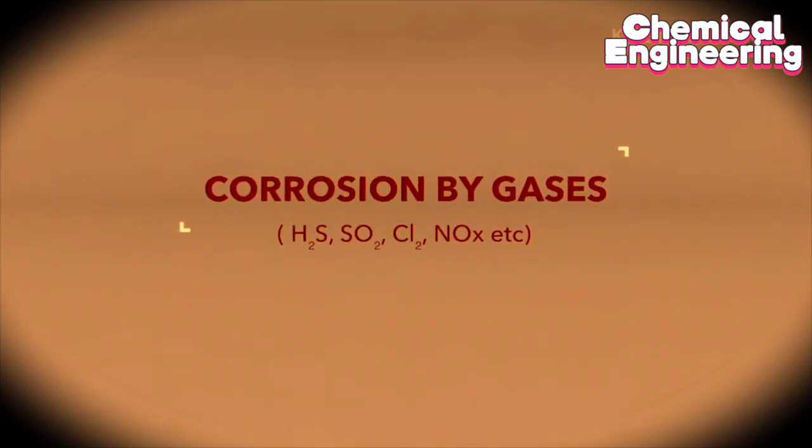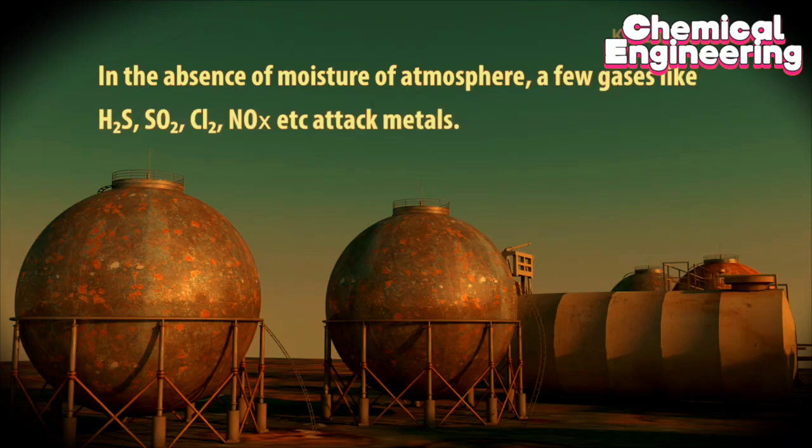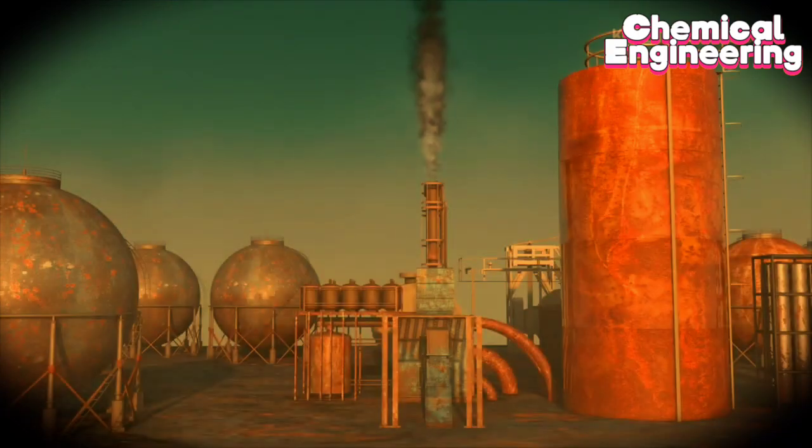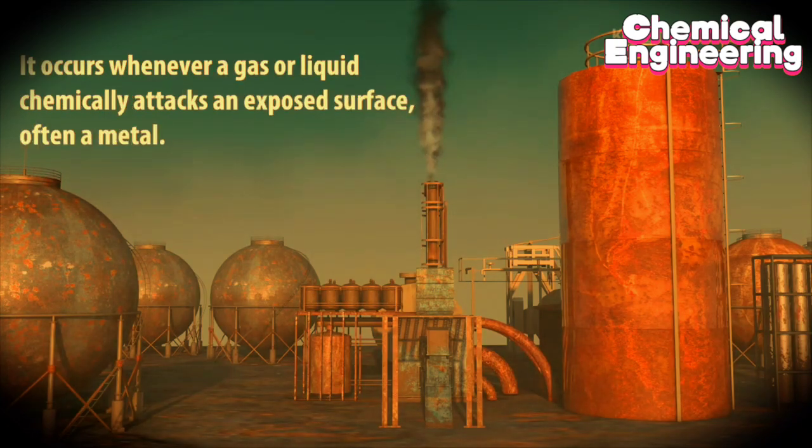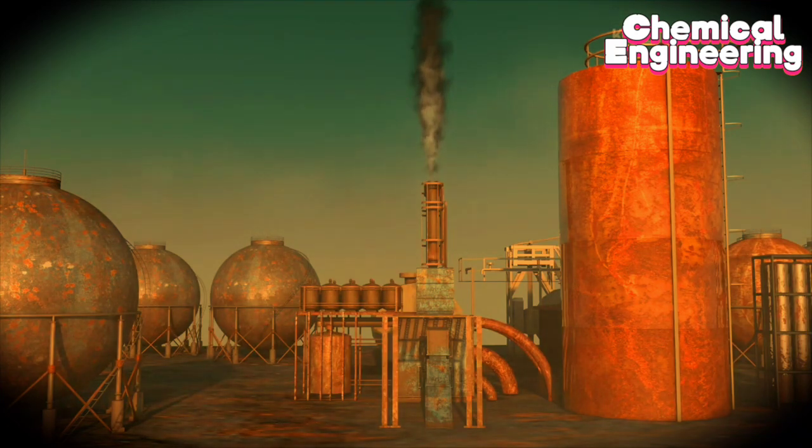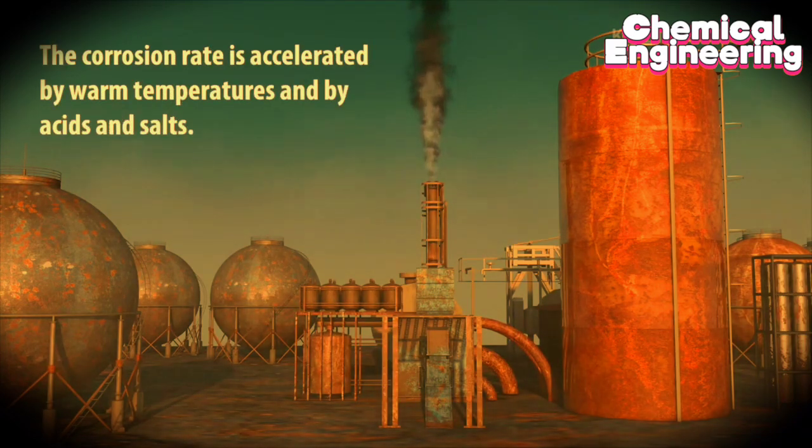Corrosion by gases: In the absence of moisture of atmosphere, a few gases like hydrogen sulfide, sulfur dioxide, chlorine, nitrous oxide, etc., attack metals. It occurs whenever a gas or liquid chemically attacks an exposed surface, often a metal. The corrosion rate is accelerated by warm temperatures and by acids and salts.